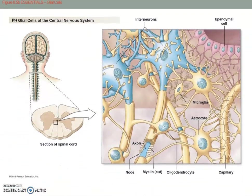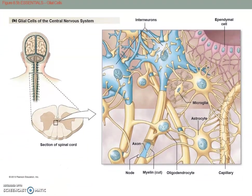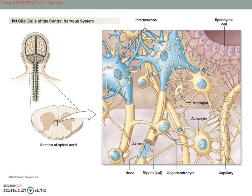Astrocytes are involved in forming the blood-brain barrier, deciding which substances can get through to the brain. You can see an astrocyte here with its foot processes hugging a capillary, adding an extra layer — that is what forms the blood-brain barrier.